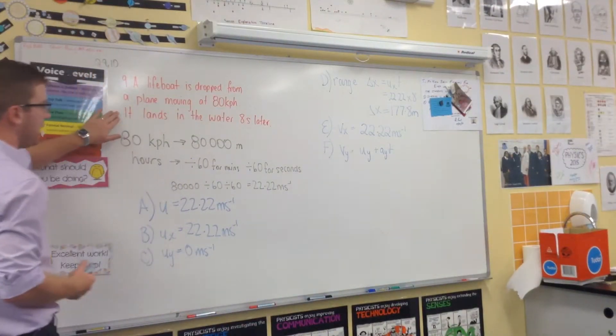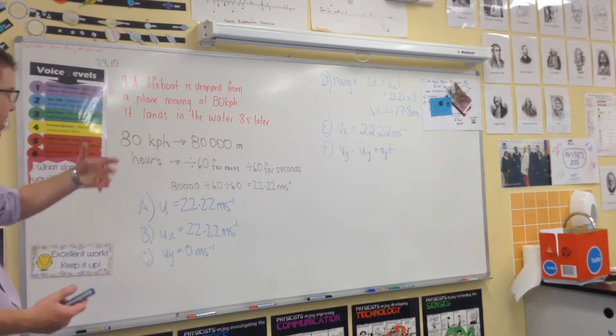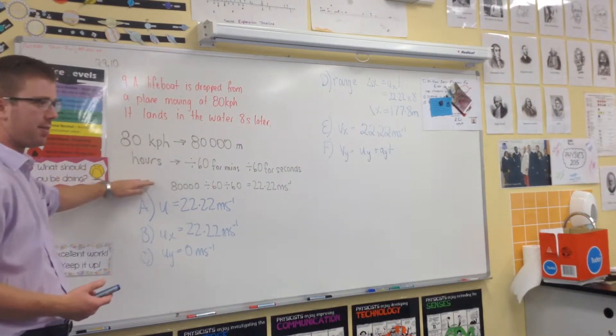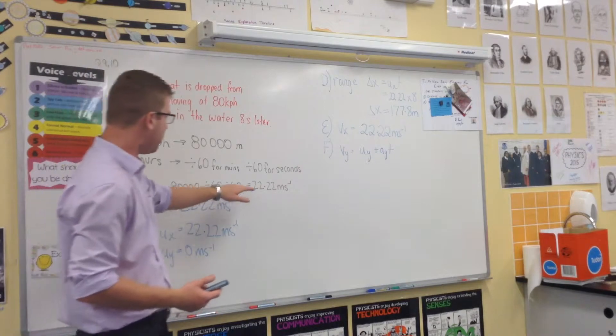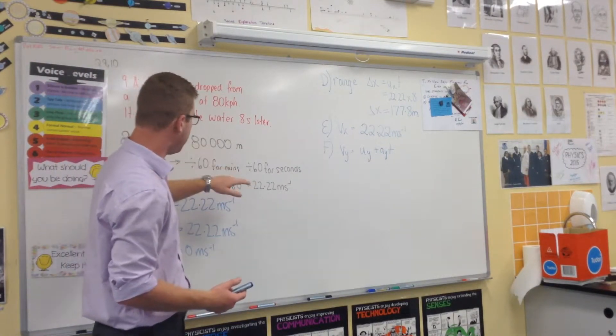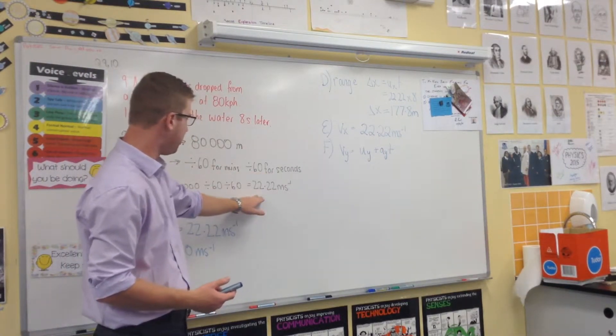So, our lifeboat is dropped from a plane moving at 80 km per hour. It lands in the water 8 seconds later. You need to convert it to meters per second. So once you divide 80,000 meters by 3600, you get 22.2.